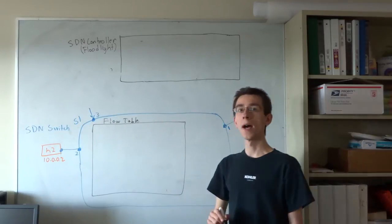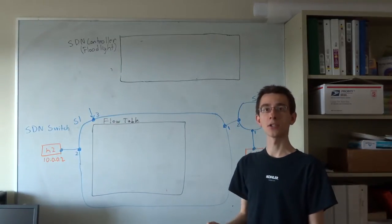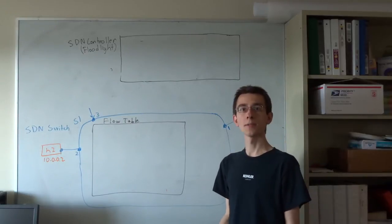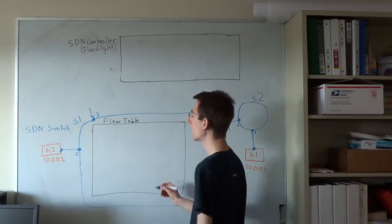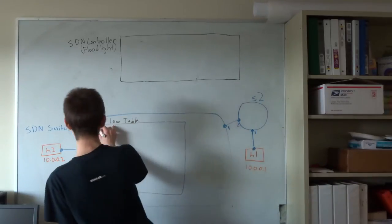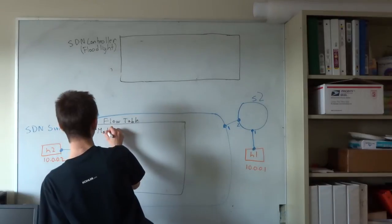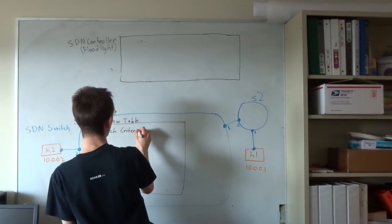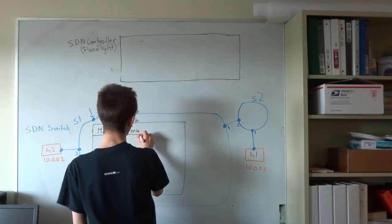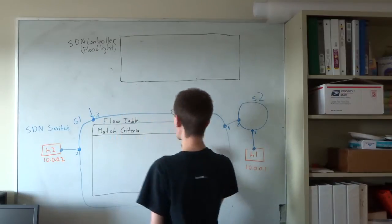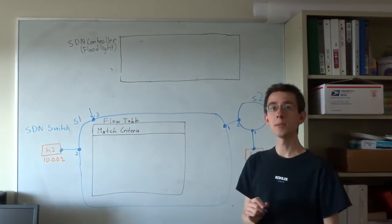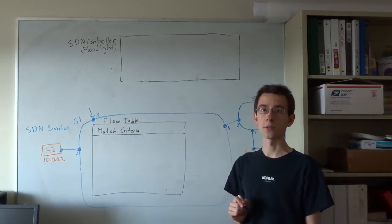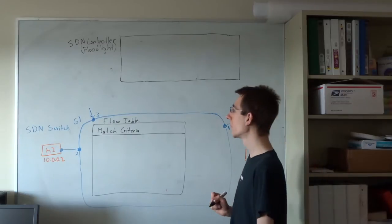This flow table is used to define what actions should be applied to packets that enter this particular SDN switch. We define which packets a particular action should be applied to by specifying a series of match criteria for each entry in the table. These match criteria can be defined over fields in the Ethernet header, IP header, TCP or UDP header, or potentially other headers as well.